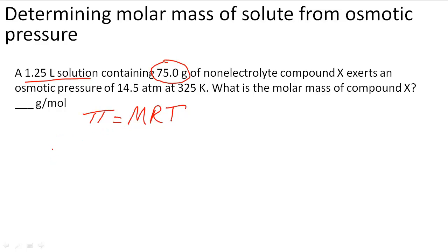To do this, pi or osmotic pressure, which we know is 14.5 atm, we're going to put 14.5 equals M.